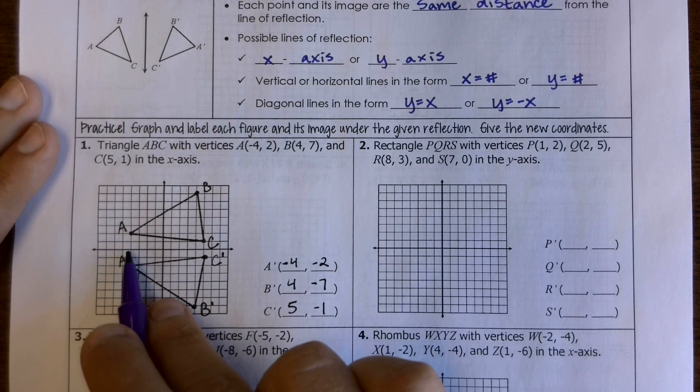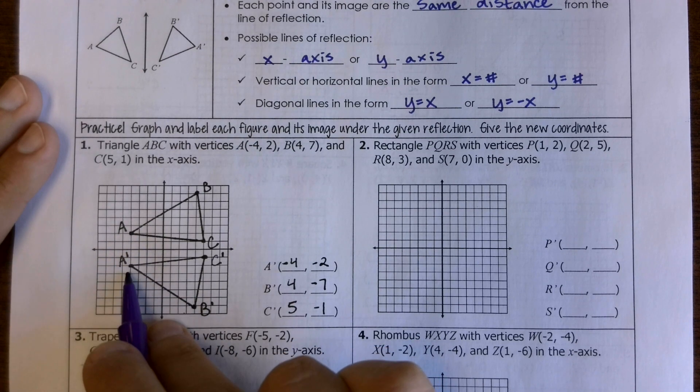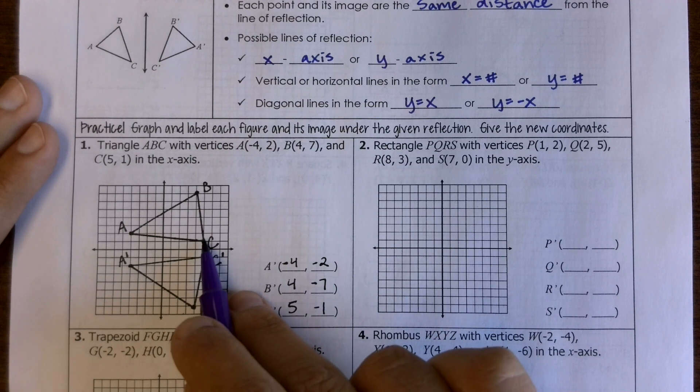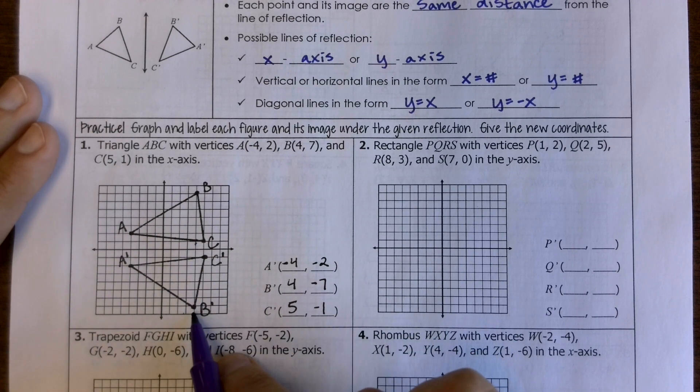So notice that A was two units above the x-axis, and now it's two units below, but the x value didn't change. Same thing for C. It was one above, and now it's one below. B was seven above, and now it's seven below the x-axis.